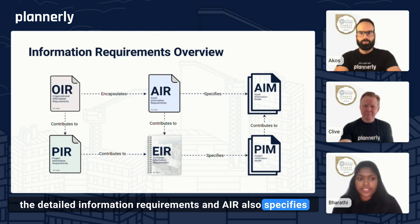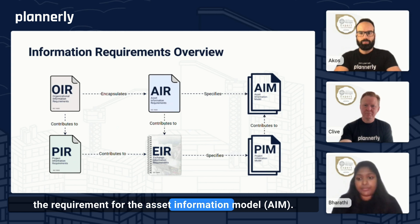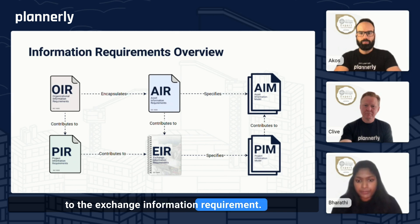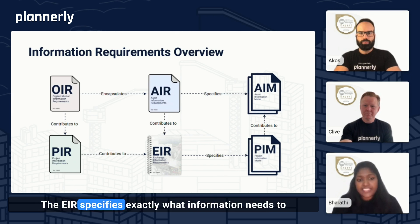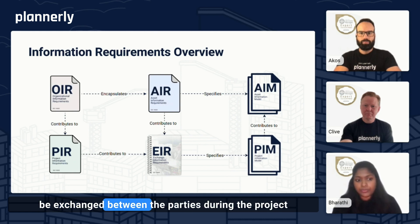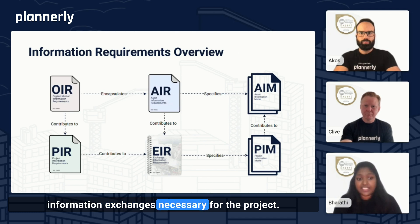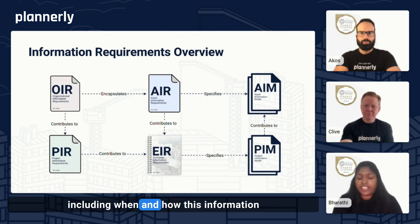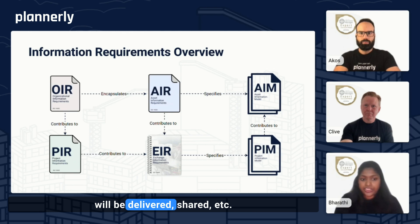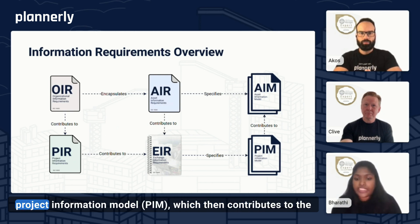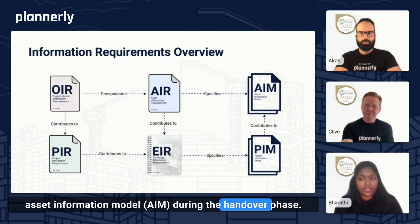The AIR also specifies the requirement for the asset information model. And finally, all of this contributes to the exchange information requirement. The EIR specifies exactly what information needs to be exchanged between the parties during the project, outlining the specific data and information exchanges necessary, including when and how this information will be delivered and shared. It also specifies the requirements for the project information model, which then contributes to the asset information model during the handover phase.